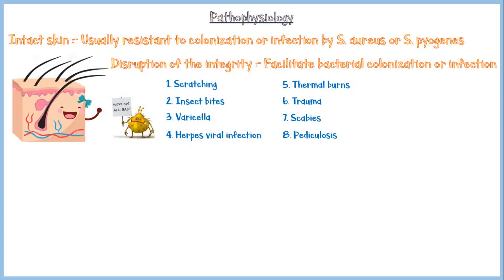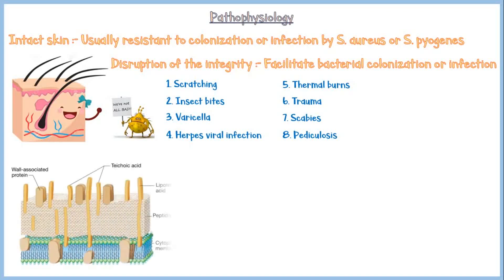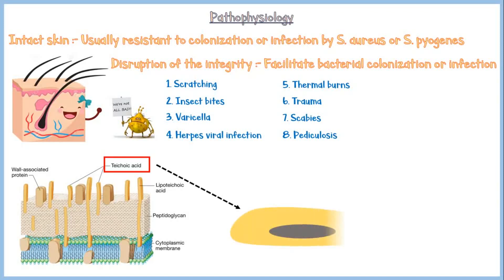Staphylococcus and Streptococcus contain a special molecule in their plasma membrane called teichoic acid. In order for colonization or infection to occur, this molecule must bind to the epithelial cell receptor fibronectin on the host cells. However, these receptors are not available to bind on intact skin, but any kind of skin disruption may expose these receptors and facilitate bacterial growth.